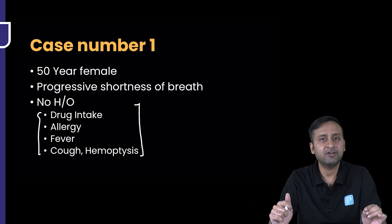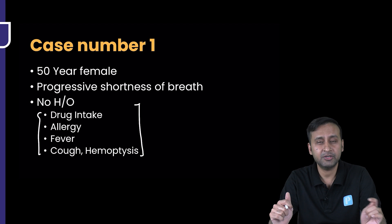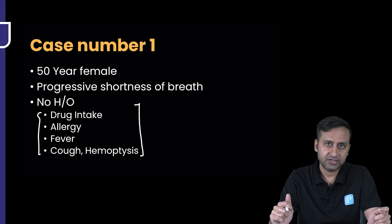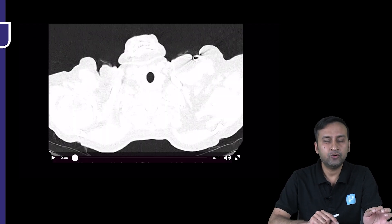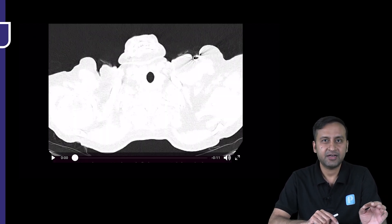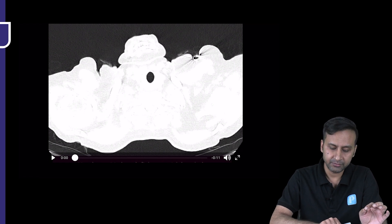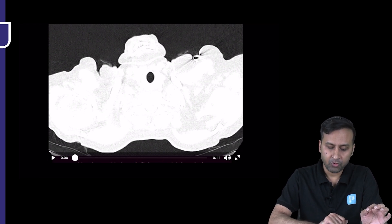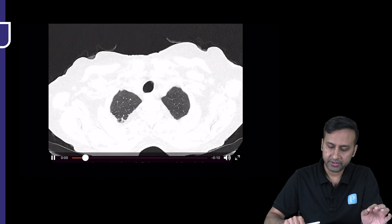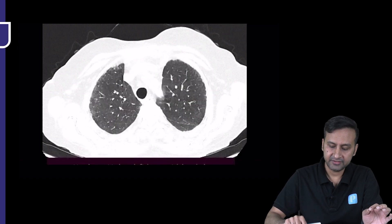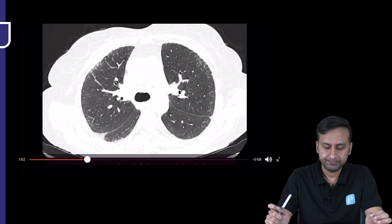I want you to have a look at the cine image of the HRCT of this patient. This is the cine loop — it starts from the lung apex and thereafter goes to the lung base. I want you to look at this image from top to bottom and jot down the important findings that you can see.